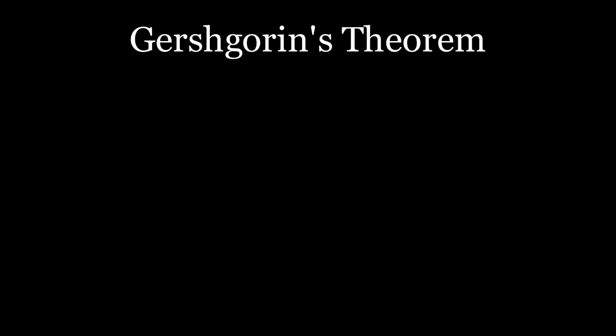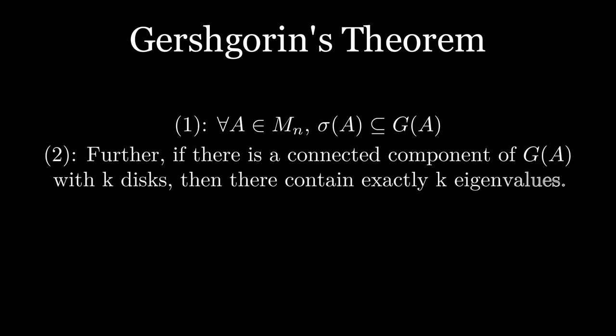Actually, what we found just now is exactly what Gershgorin proved in 1931. The formal description is like this. For all n-by-n matrix A, the spectrum of A, that means all the eigenvalues, is contained in G of A. Further, if there's a connected component of G of A with K disks, then they contain exactly K eigenvalues.